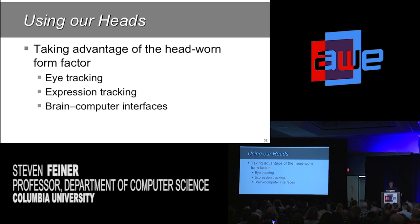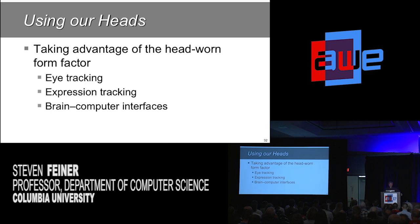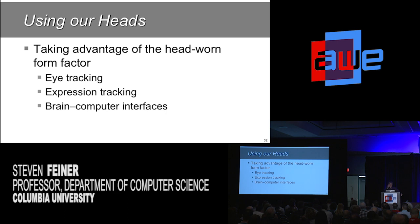Head-worn displays are a lot of where things are going to be going, as opposed to phones you have to pull out and hold up. Once you have something on your head, you can put other stuff there besides the display — like eye tracking, which has wonderful uses ranging from foveated rendering, trying to do most of the rendering budget where you're really looking, to user interfaces knowing which way a person is looking, and even telling how big their pupils are as an indication of how interested they are. Expression tracking — cameras looking at your eyes or face — can determine what you think, so far as looking at your face can do that. Brain-computer interfaces are also enabled by having the ability to put sensors really close to and touching your head.